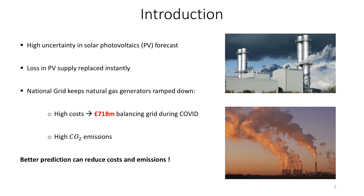However, this means that even if we have enough PV power to match the demand, we still have natural gas generators that are kept spinning for nothing, and this results in high costs and high CO2 emissions. So, if we can predict PV power by even one or two hours ahead, we could actually significantly reduce costs and emissions.